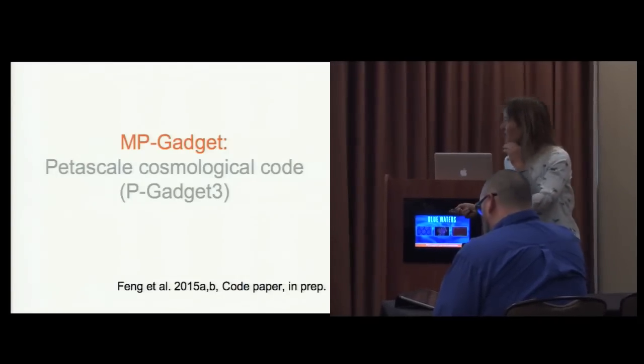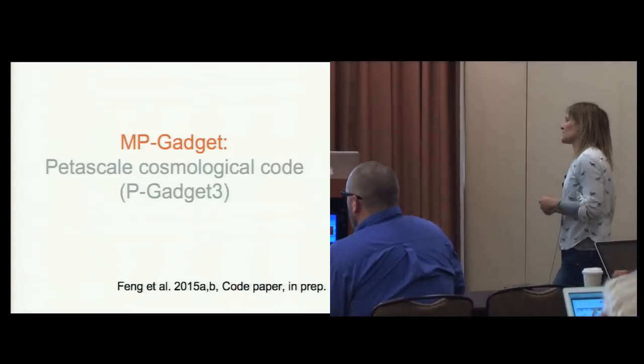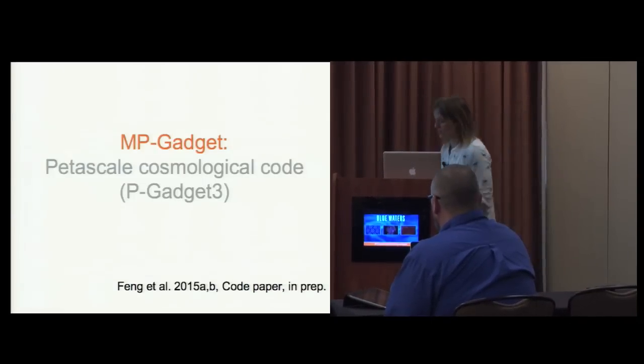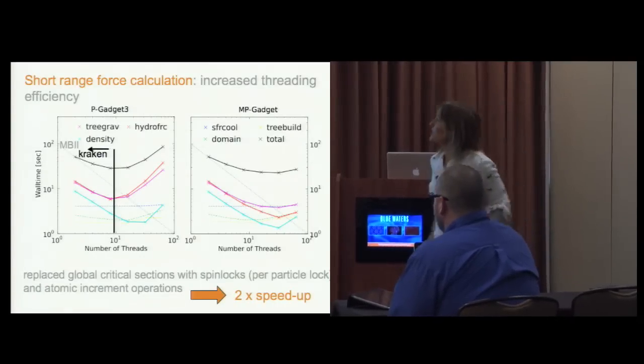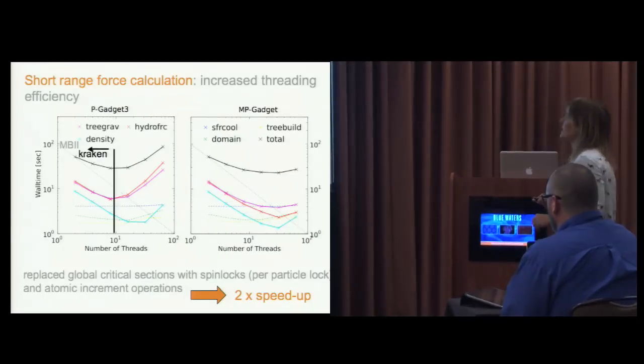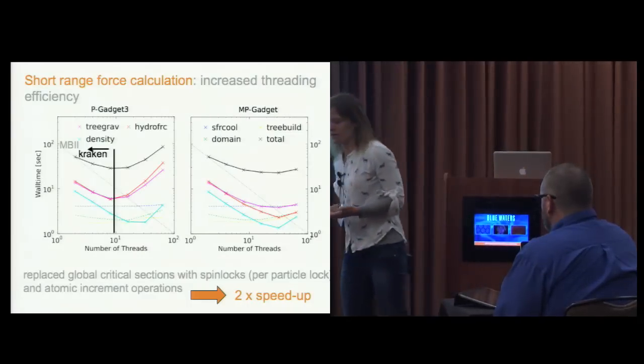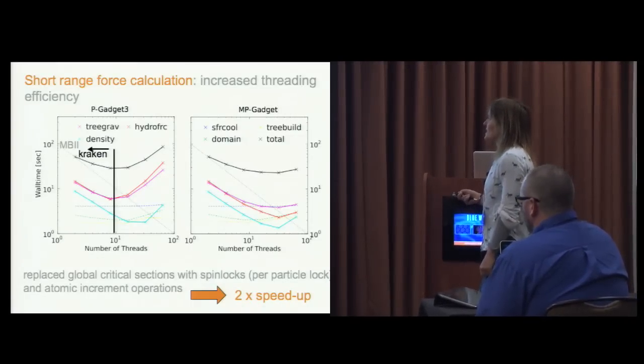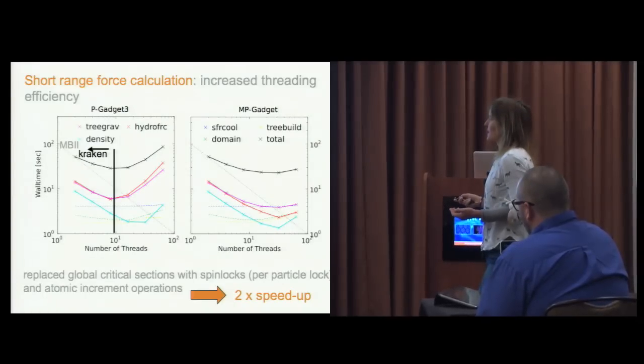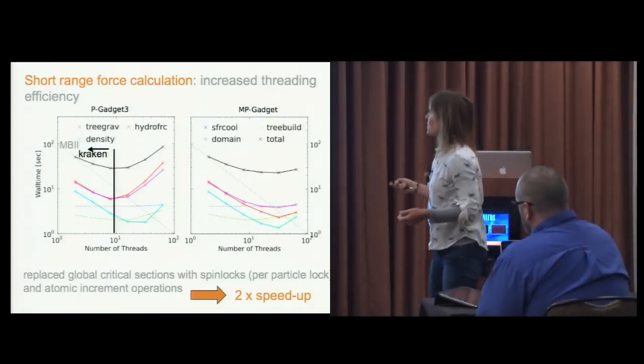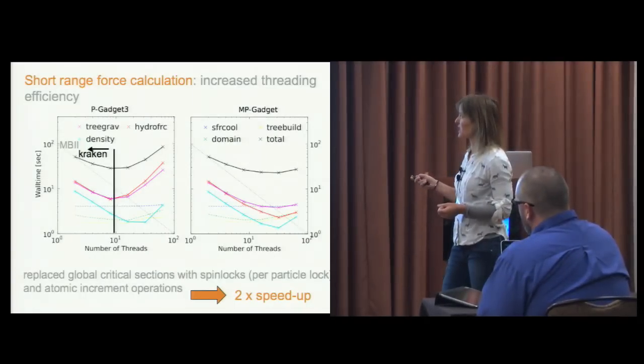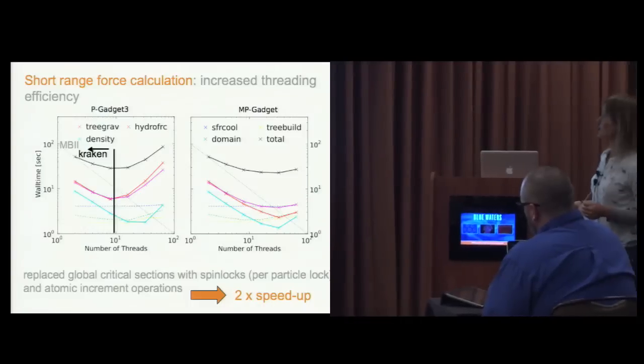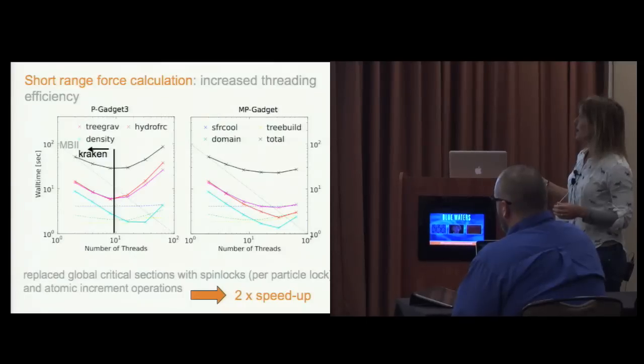I'll give you a brief update on what has happened to this new version of this cosmological code. One thing we noticed was some problems in the short range force calculations. The code was already fully threaded when we were working on Kraken, but when we go to numbers of threads more appropriate for Blue Waters, above roughly 10 threads or so, we saw that as threads try to drift the same particle at the same time, there's a significant slowdown for large numbers of threads.